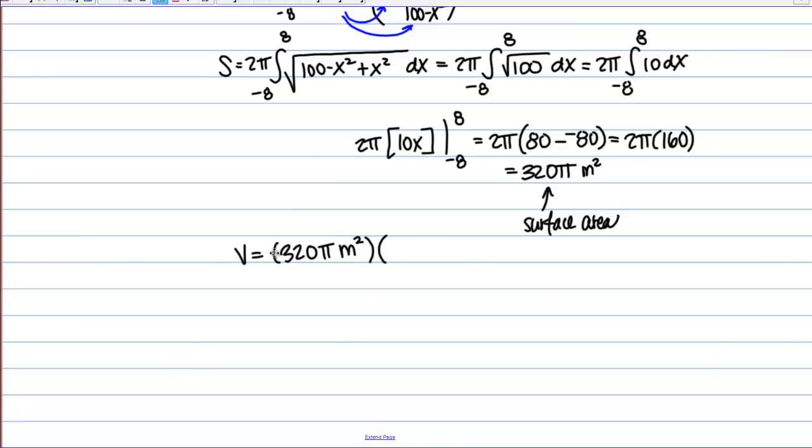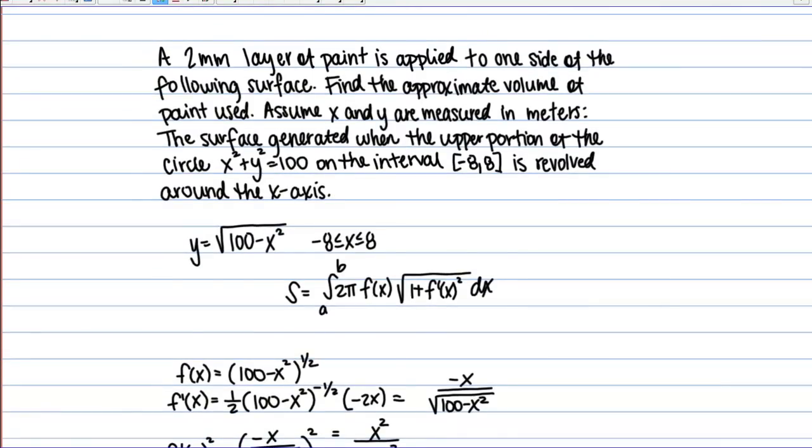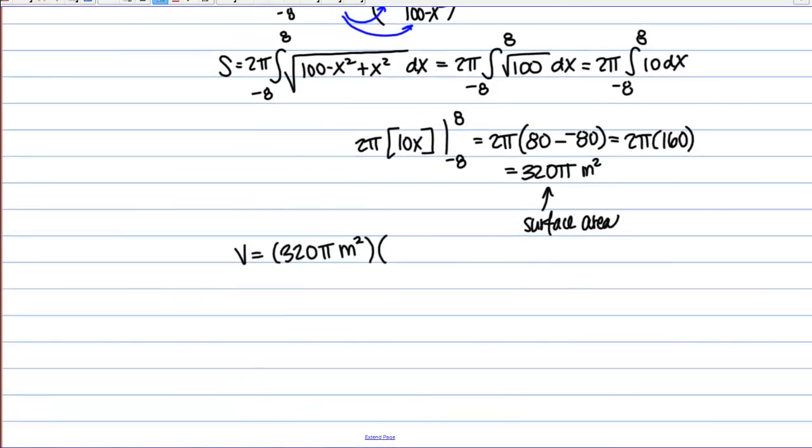Now the paint here is given to us in millimeters, but to be consistent with our units we can convert that to meters. So 2 millimeters is 2 thousandths of a meter. So then I'm multiplying by 2 over 1000 here, meters.